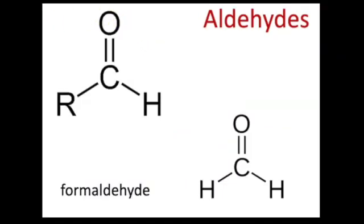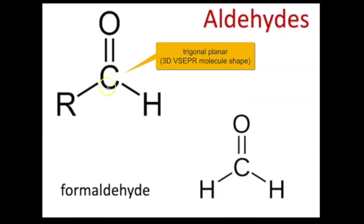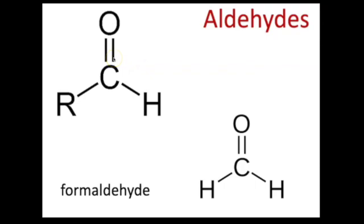The aldehyde functional group is trigonal planar, where the central atom — the carbon — has three bonds. This is because the double bond, when considering three-dimensional space, is really just a single bond since it's only going in one direction. This carbon is number one of the carbon chain, so the numbering continues with the rest of the chain: one, two, and so on.